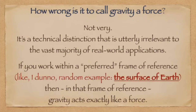Flat earthers often treat this as a gotcha moment if you accidentally refer to gravity as a force. How wrong is it to do that? Not very, especially for a flat earther. The only circumstances where the distinction between Newtonian and Einsteinian theory is important would be in a very strong gravitational field, such as very close to a star, or in some cosmological or astrophysical setting. Flat earthers don't believe such things exist, so why they're making a fuss about it is beyond me. On the surface of Earth, where the gravitational field is relatively weak, there is hardly any difference between the Einsteinian and the Newtonian theory, and it is perfectly valid to refer to gravity as a force.